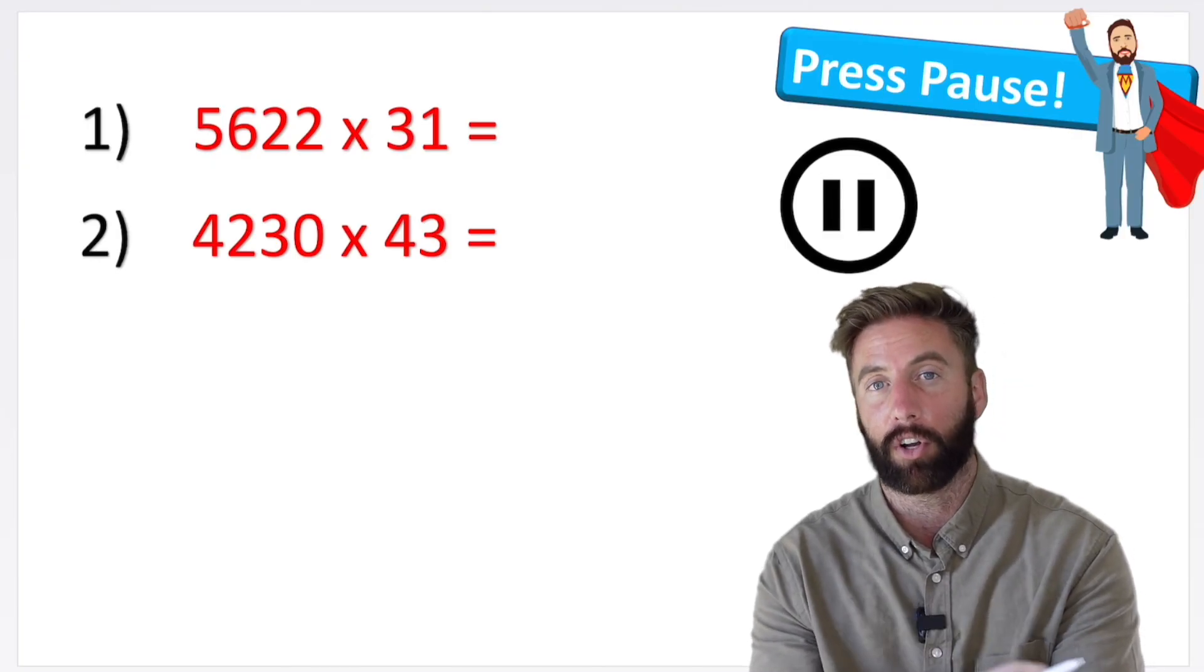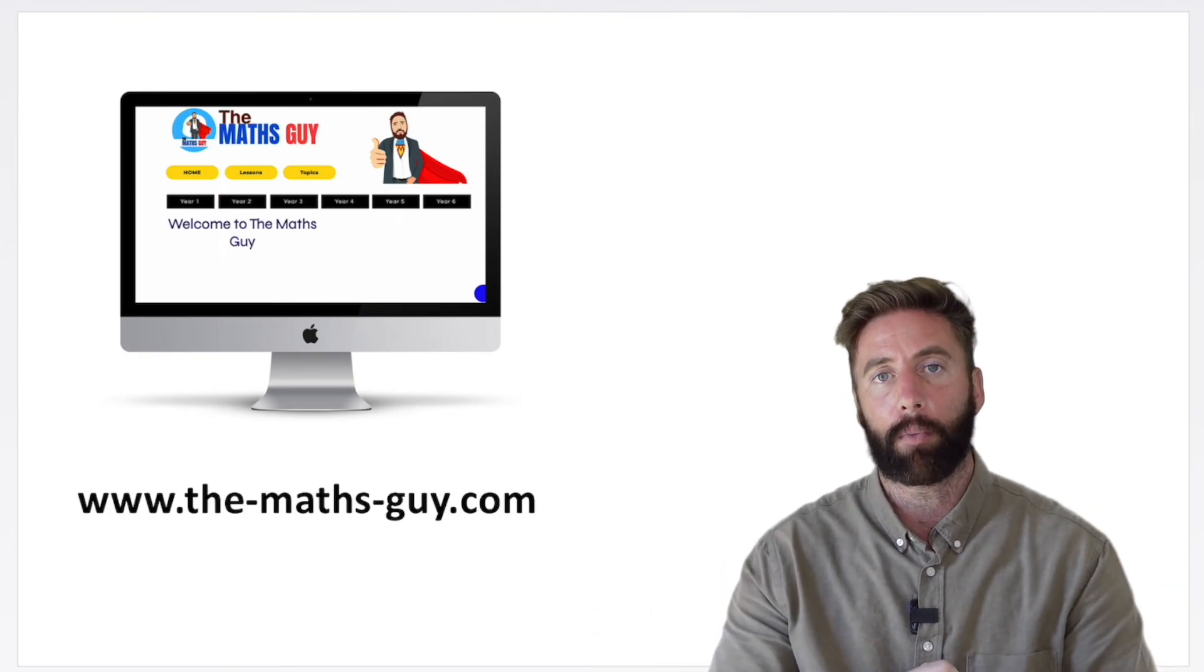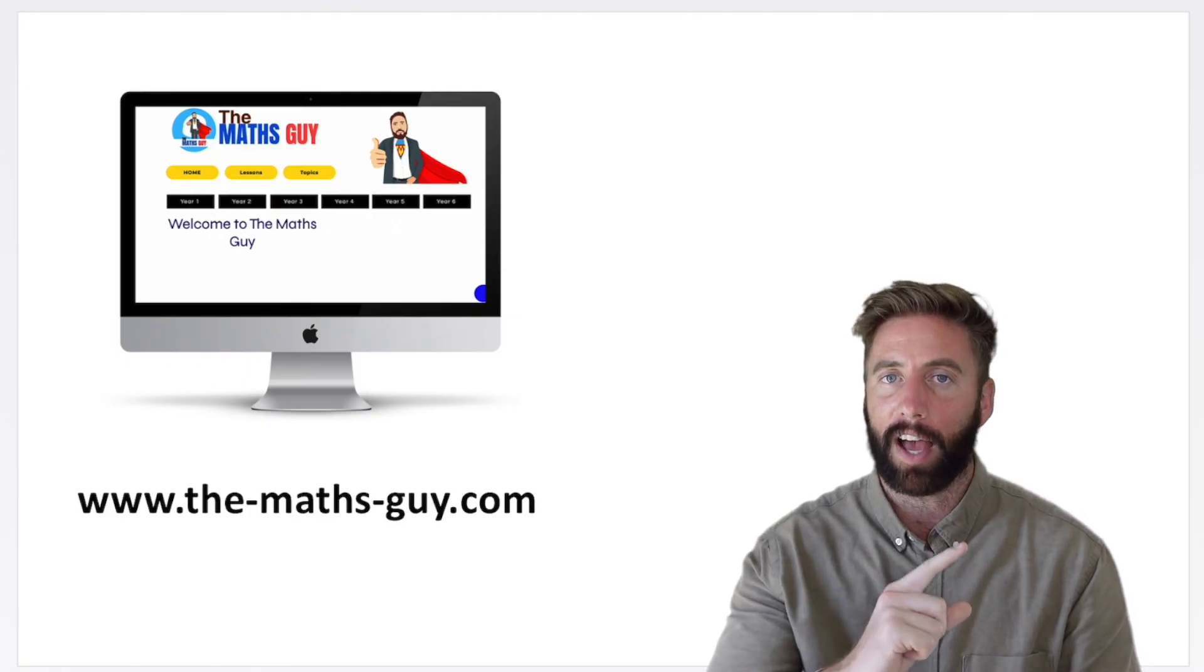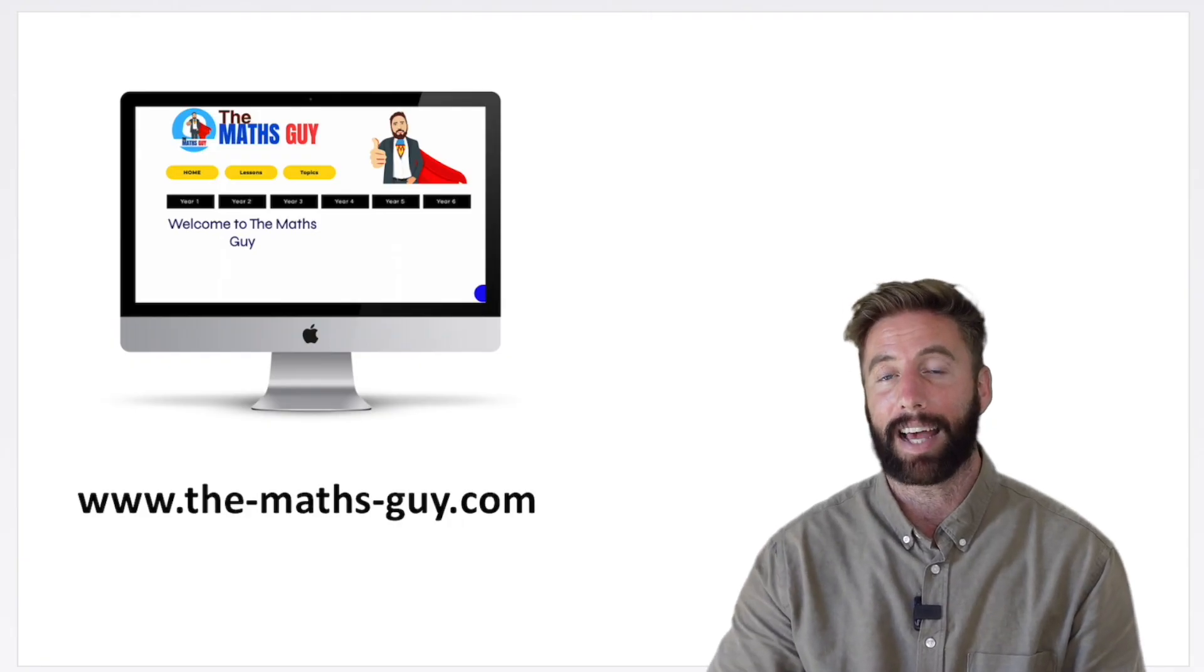Okay, and there we have it. That was multiplying a four-digit number by a two-digit number. Hopefully this helped, hopefully you've got it now. If you have, give me a thumbs up, subscribe to the channel. There are going to be daily videos like this. And for now, peace out.